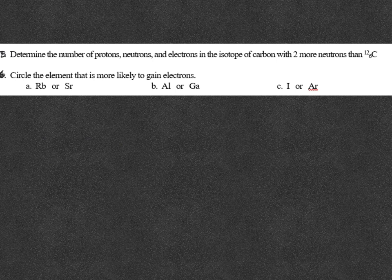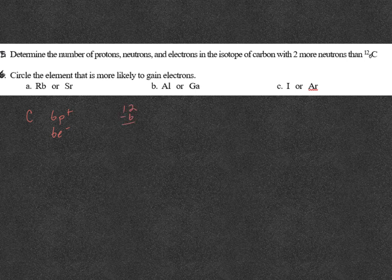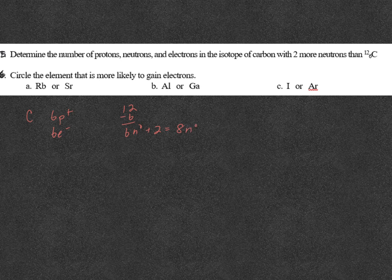All right, protons, neutrons, electrons in an isotope of carbon with two more neutrons than carbon-12. Remember, isotopes are atoms of the same element with different numbers of neutrons. So carbon is going to have six protons regardless of whether or not it's an isotope. Six electrons because it's neutral. If it's carbon-12, it means its mass number is 12. So 12 minus 6 means six neutrons, but it's the isotope that has two more. So it's going to be eight neutrons, six protons, six electrons.